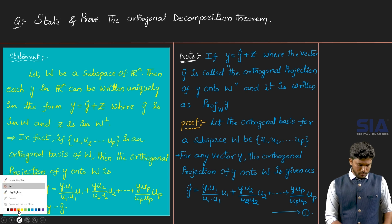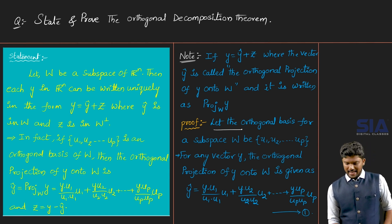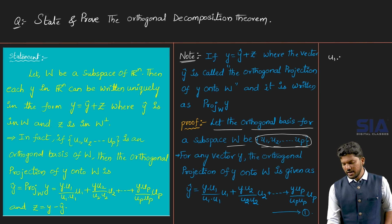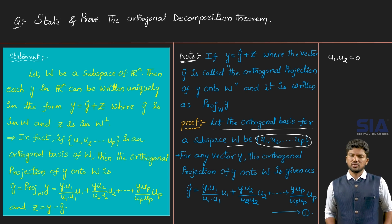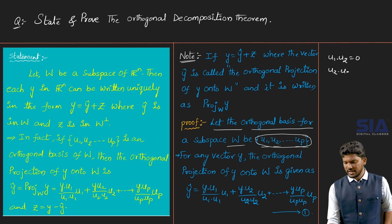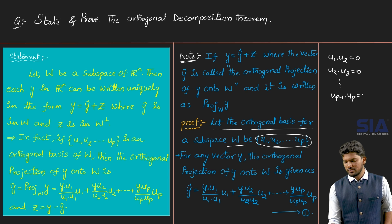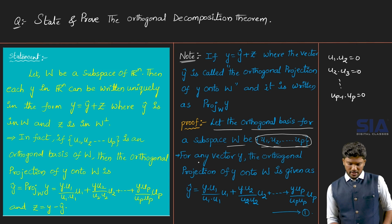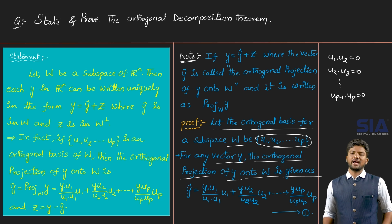Now observe the proof carefully. Let the orthogonal basis for subspace W be {u1, u2, ..., u_p}. This is an orthogonal basis, meaning the inner product of any two different vectors is zero: u1·u2 equals zero, u2·u3 equals zero, and so on, up to u_{p-1}·u_p equals zero. For any vector small y, the orthogonal projection of y onto W is given as follows.